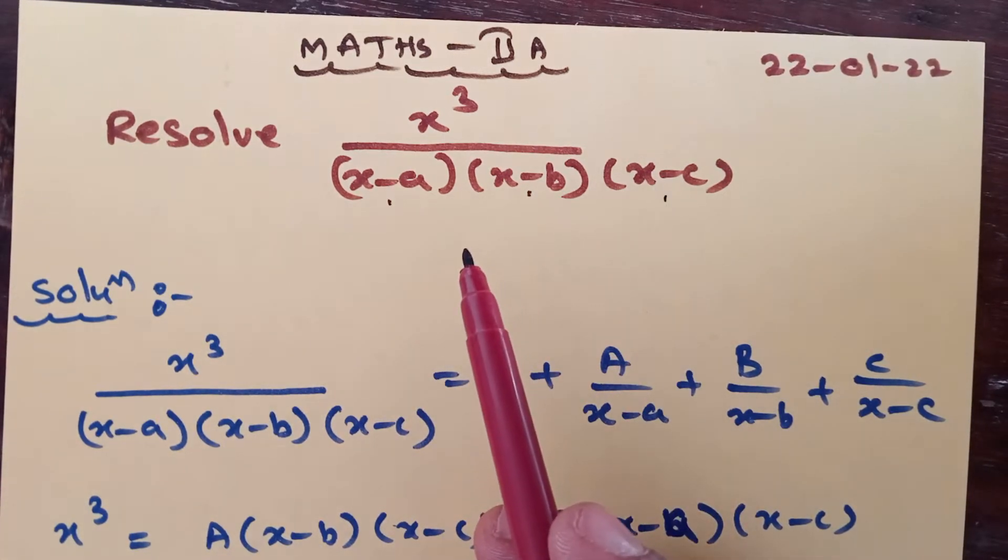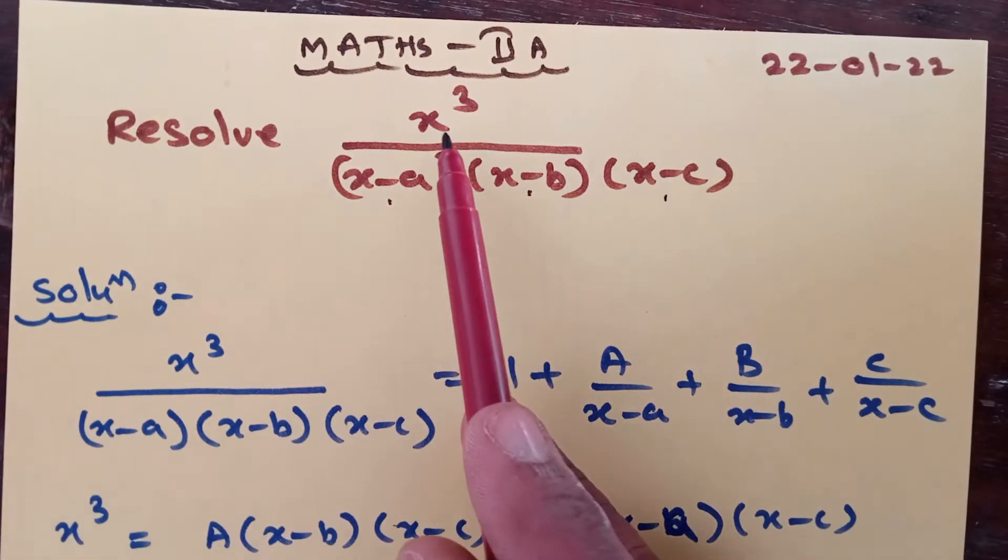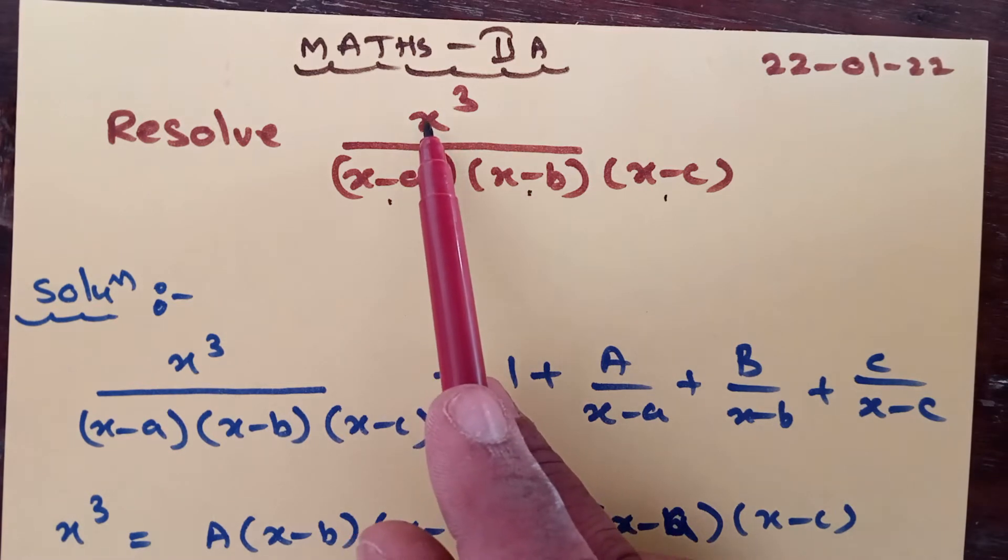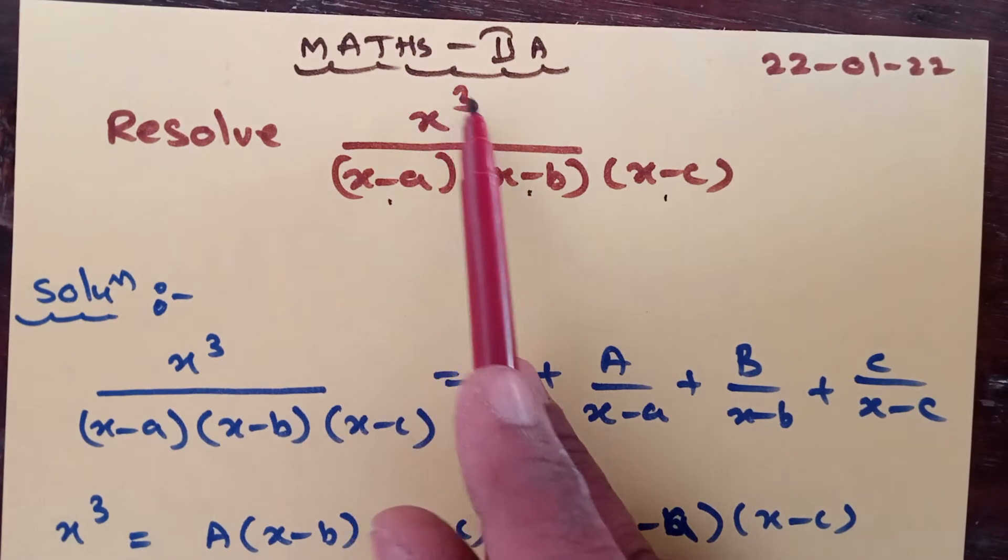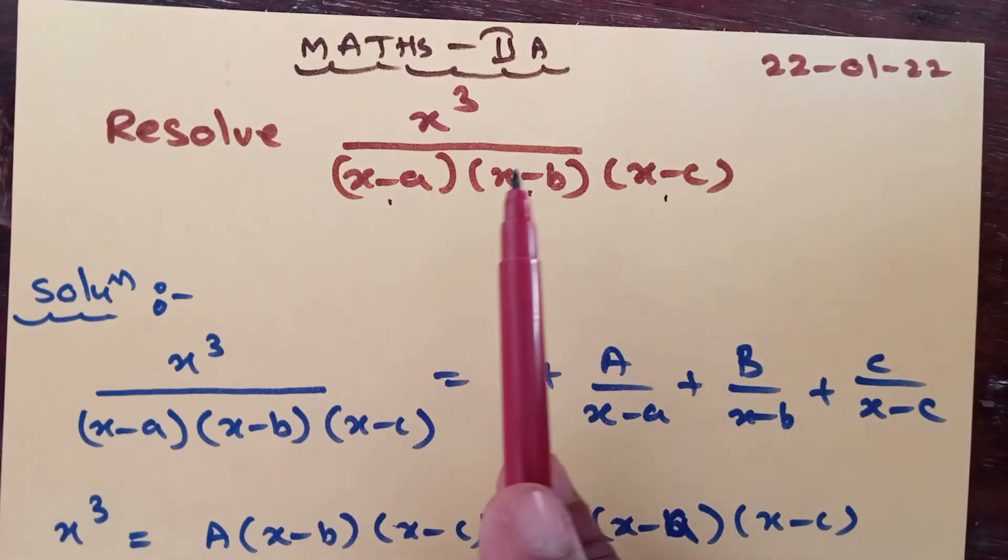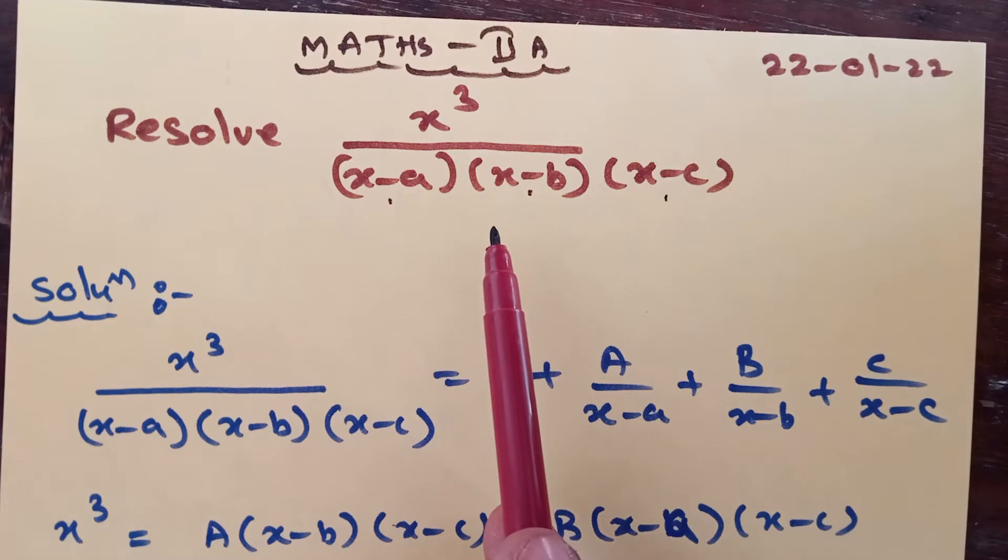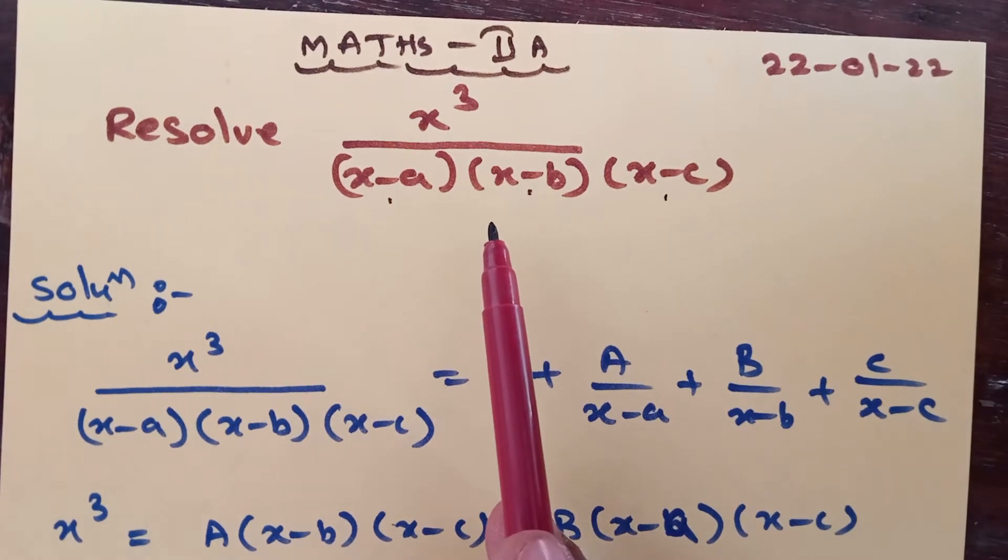So up to now the partial fraction questions are proper questions. Now this is improper question. Improper question means here x cube, the power is 3. If you open the brackets of denominator, the power is again 3. So both numerator and denominator degrees are same. So it is improper expression.